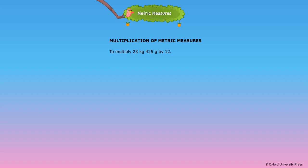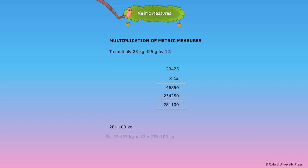We can multiply the numbers as we do in decimals. Ignore the decimal point and multiply. Place the decimal after three digits from the right. For example, 23.425 kilograms multiplied by 12 equals 281.100 kilograms.